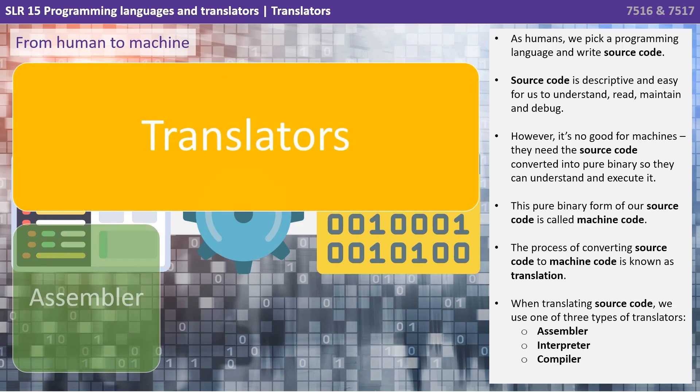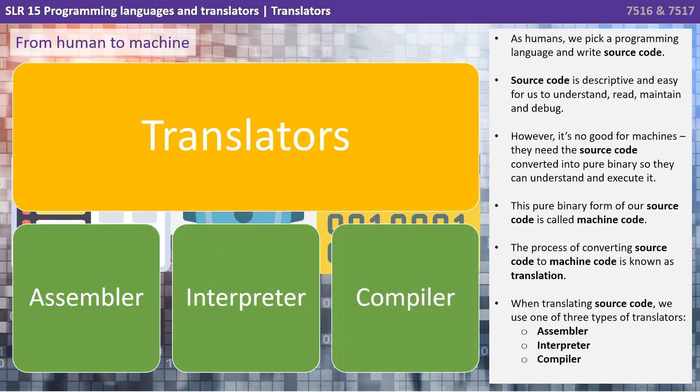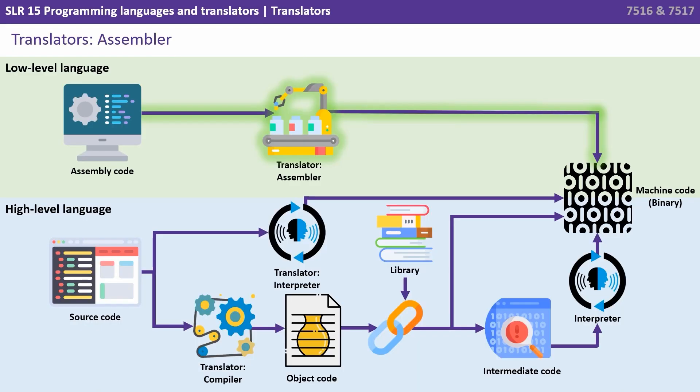When translating source code we use one of three types of translators: an assembler, an interpreter and a compiler. Here on the screen is a handy abstracted diagram that shows the three different types of translators.